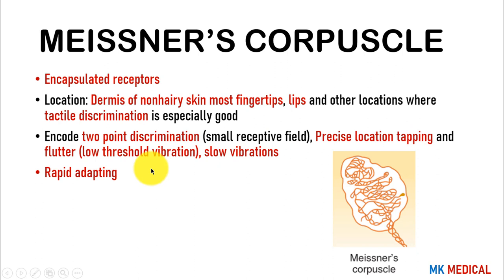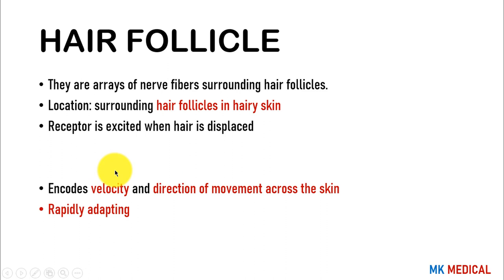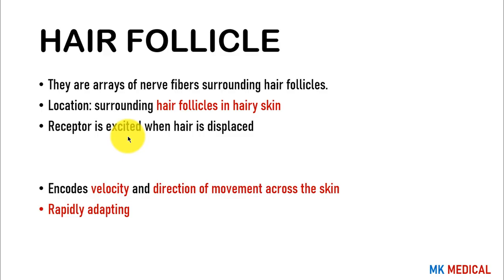Hair follicle receptors surround hair follicles and are found only in hairy skin. They are excited when a hair follicle is displaced, encoding the velocity and direction of movement across the skin. For example, sticking your head out of a moving car window allows you to detect changes in speed based on deflection of hairs on your skin. These are rapidly adapting receptors.